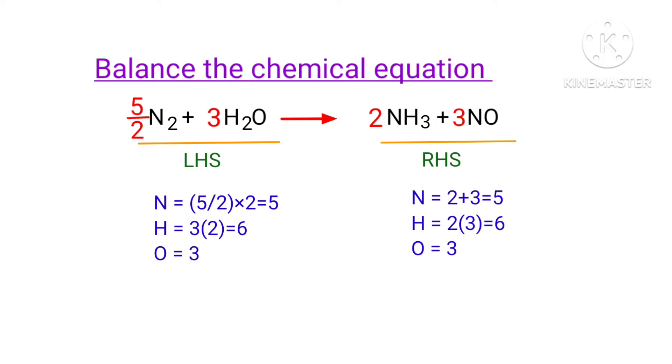In this equation, five by two is a rational number. We don't use rational numbers for a chemical equation. So to get whole numbers, we need to multiply this equation by a coefficient of two.